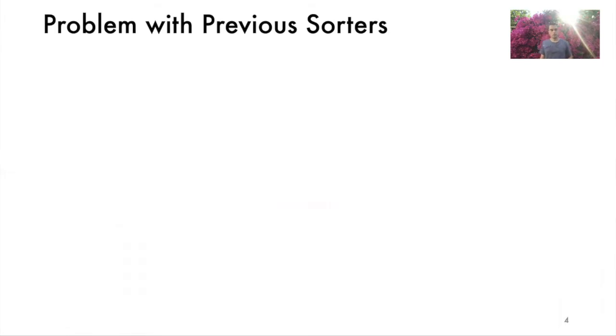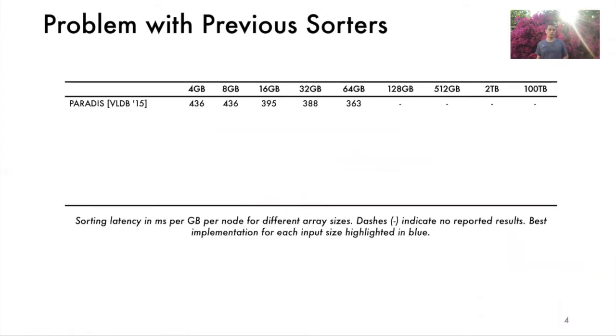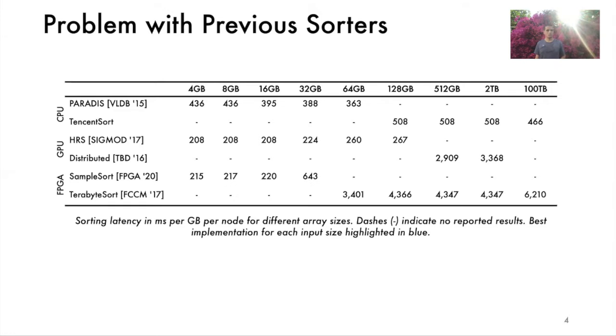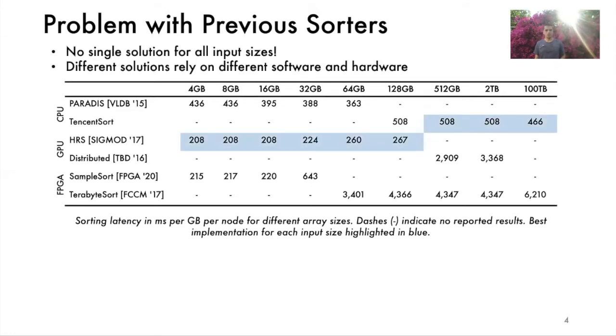Let's look at sorting performance in latency per gigabyte for state of the art CPU, GPU and FPGA sorters. We list performance over a vast range of array sizes from 4 gigabytes to 100 terabytes. Lower values are better. Paradis is the fastest CPU sorter but only considers arrays that fit into its 64 gigabyte RAM. Dashes in the table indicate no reported results. Tencent sort uses a distributed system of CPU nodes to achieve world record results in the terabyte scale range. Here are respectively the best single GPU and distributed GPU sorters as well as FPGA sorters. We highlight the best performing implementations for each array size in blue.